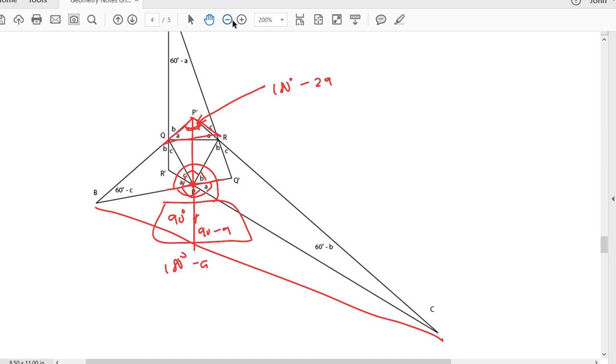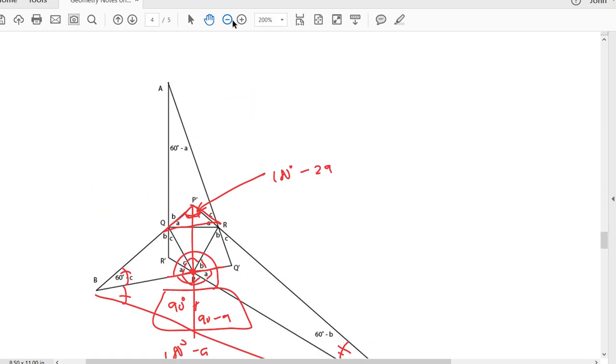So that means that these two angles are the same and these two angles are the same. And we already knew that those two angles are the same. Now the exact same reasoning works over here for this triangle. This is the in center of there, so these two angles are the same and these two angles are the same.